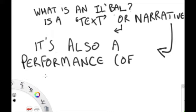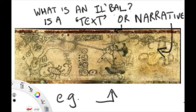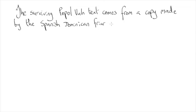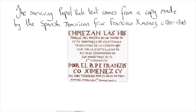You might ask, well, how is this possible? We have to bear in mind that the text that's come down to us today was a copy made by a Dominican friar, a Spanish friar, called Francisco Jimenez. Roughly between the years 1701 and 1703, he came across the manuscript in his parish of Chichicastenango.